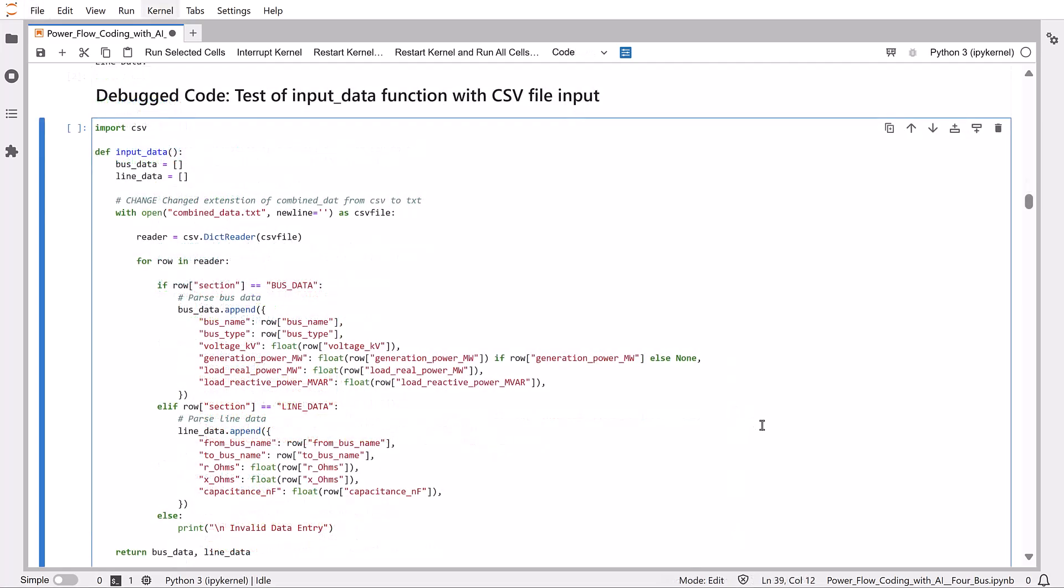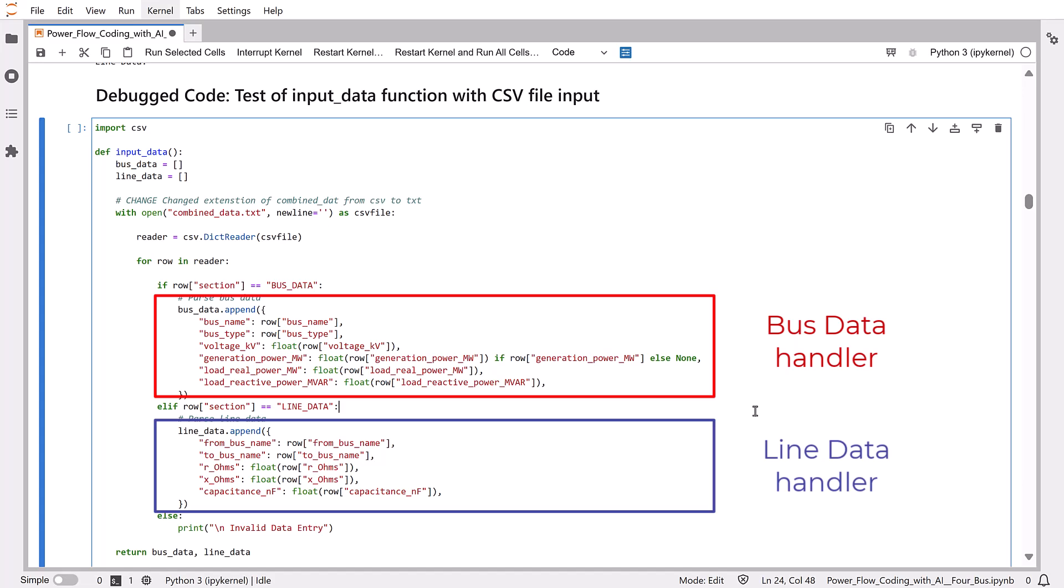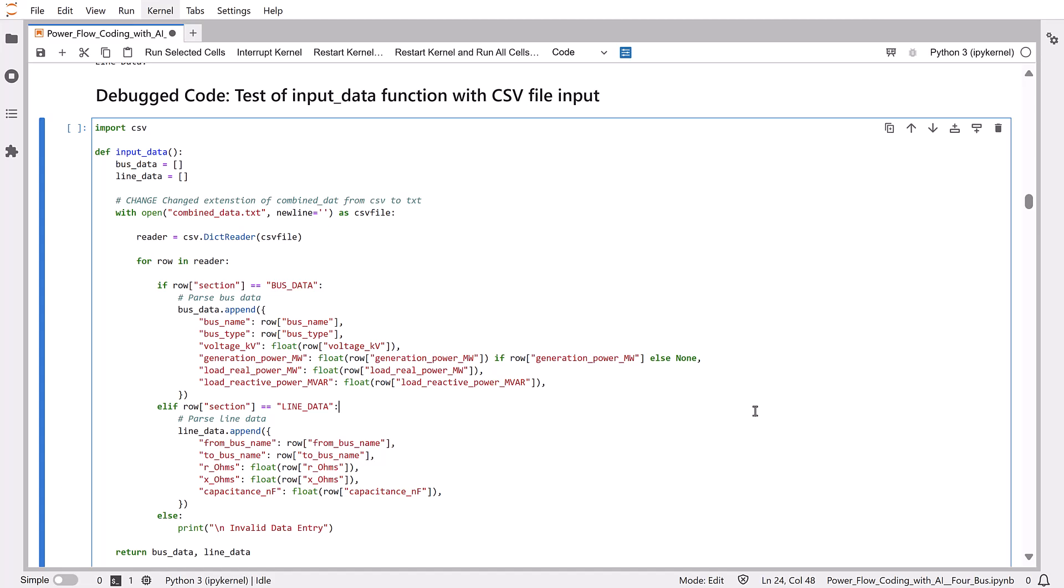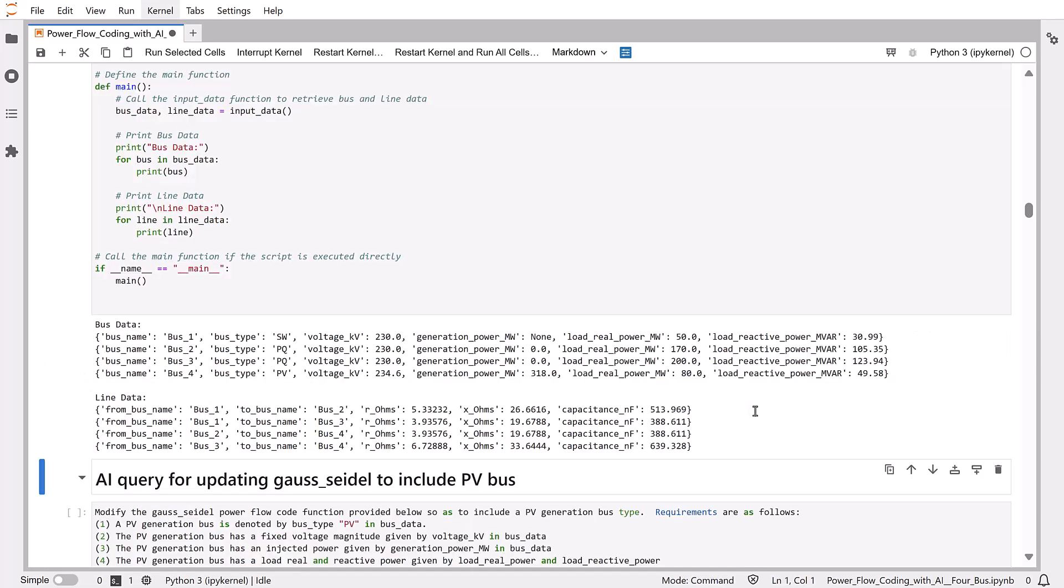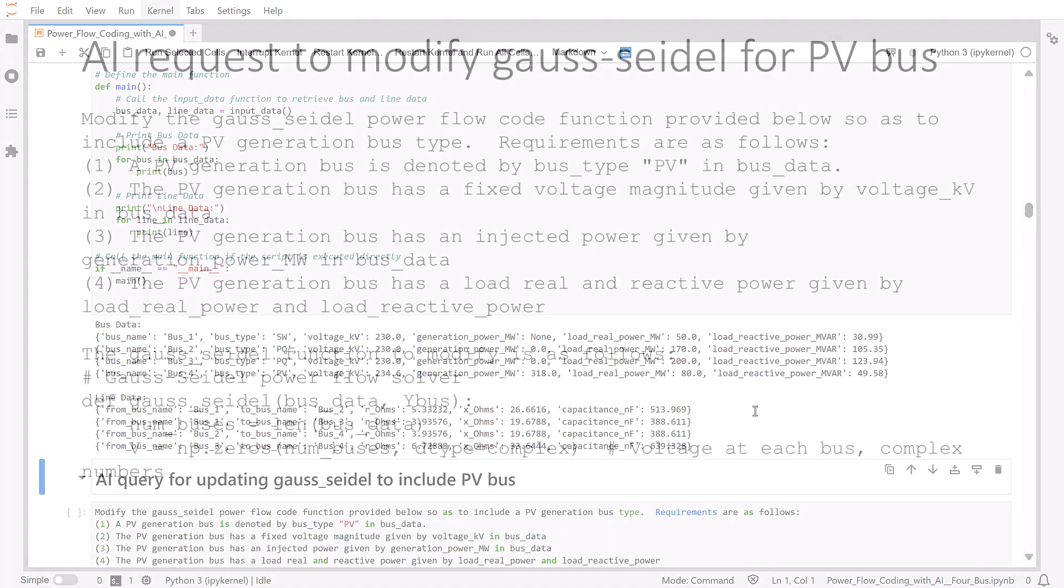The debugged code, after correcting the logic, is shown in the next cell. You can see that I removed the if block that sets isLineData and executes the continue statement. Instead, I modified the existing logic to jump to the appropriate bus or line row handling code using a test on the section name. Note I also print an error message if we have a non-bus or line data entry. Now, when we rerun the input data function, we get the correct results.